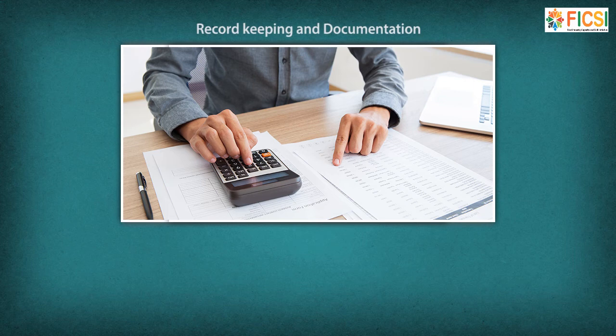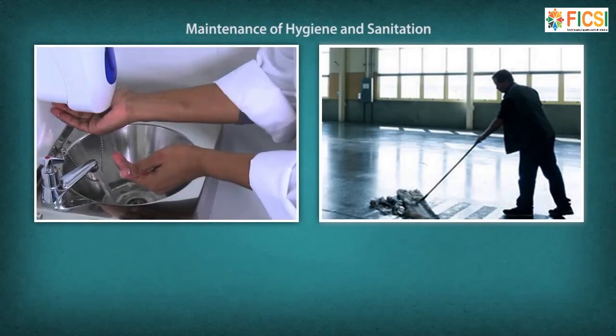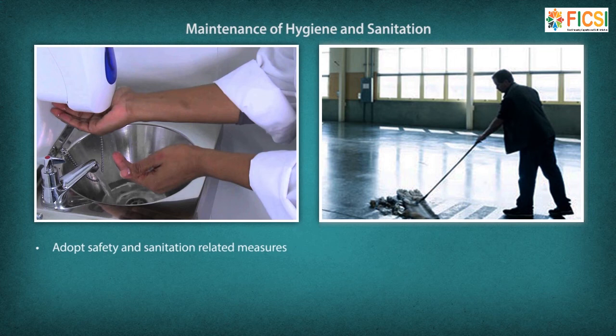The Chief Miller is responsible for record keeping and documentation, including documenting raw materials, production schedules, process parameters and finished products. They also maintain hygiene and sanitation, adopt safety and sanitation-related measures, and follow food safety norms and practices.